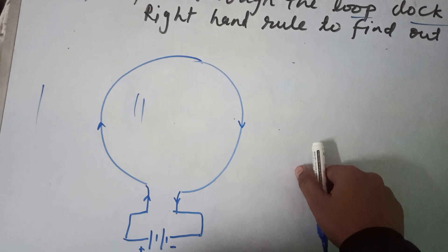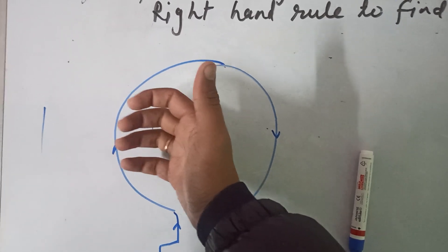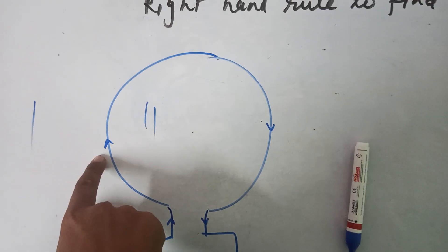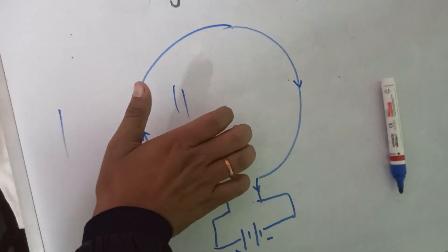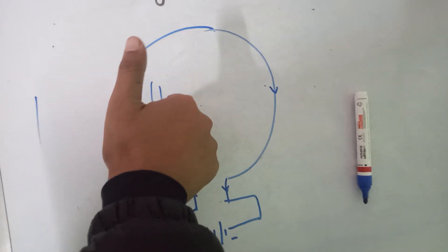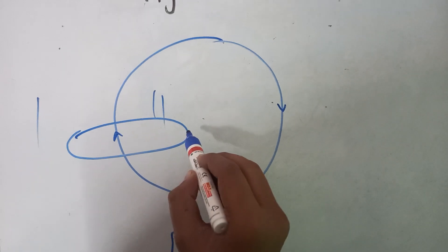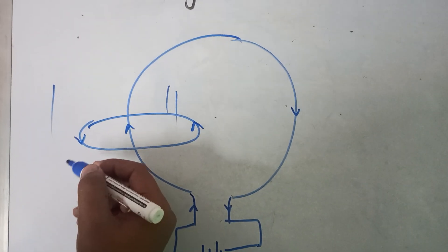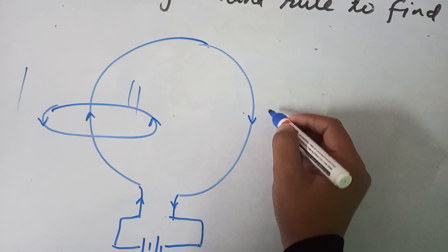The right-hand thumb rule says that the thumb points in the direction of the current, and the fingers show the direction of the magnetic field. So if we draw any magnetic field here, the direction should be like this — it will come out, coming out outside the plane.